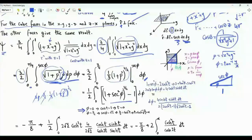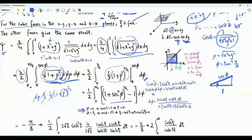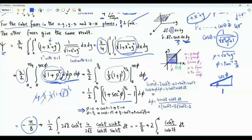Our double integral is now reduced to one-half times a single integral with respect to phi from 0 to pi over 4. When we put rho equal to 0, we get minus 1, and integrating the constant term gives minus pi over 4 times one-half, that is minus pi over 8. The challenge now is to integrate (1 plus sec squared phi) all to the power 3 over 2.